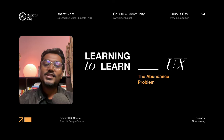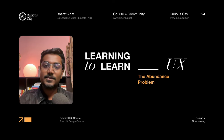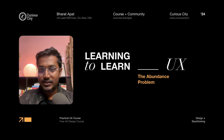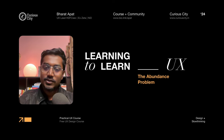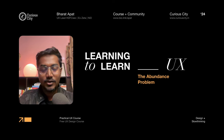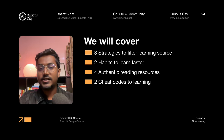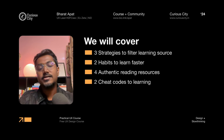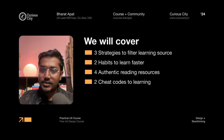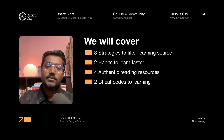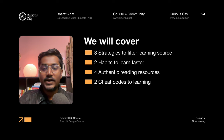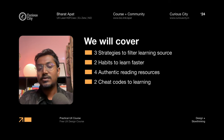It now seems overwhelming to learn so much from so many resources. However, to deal with it, you need to narrow down your learning choices, and this chapter is all about just that. Here's a glimpse of what's coming next: we will cover three strategies to filter learning sources, two habits to learn faster, four authentic sources that have stood the test of time, and finally two secret cheat codes to learn UX in 2024.